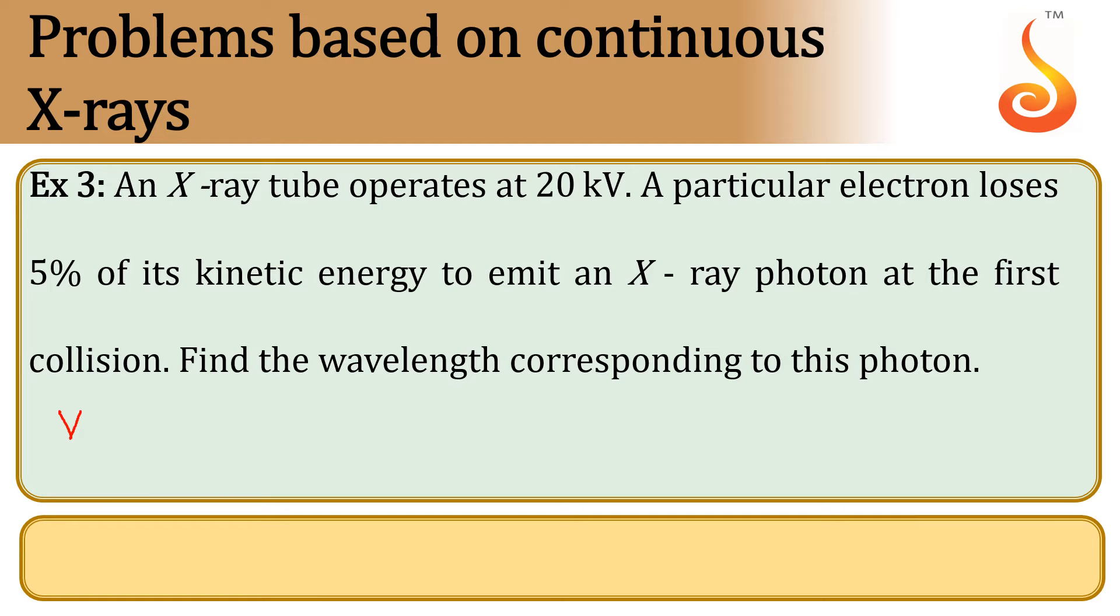The potential difference at which the X-ray tube operates was 20 kV, that means 2 × 10^4 volts.